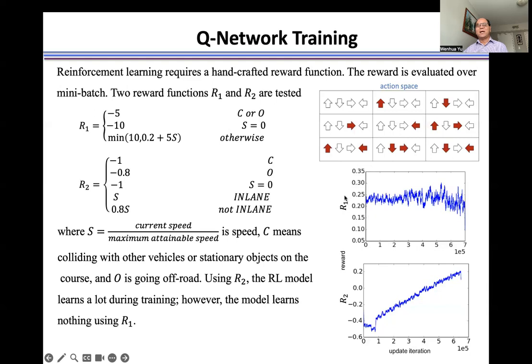You see, R1 used as a reward function, the agent cannot learn anything during the training. It's not good because it will decrease.